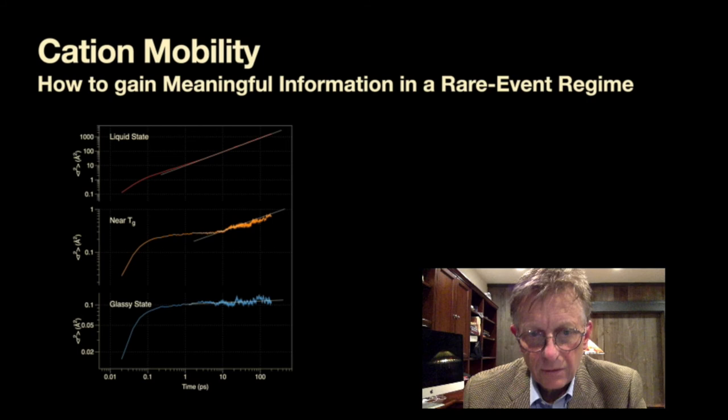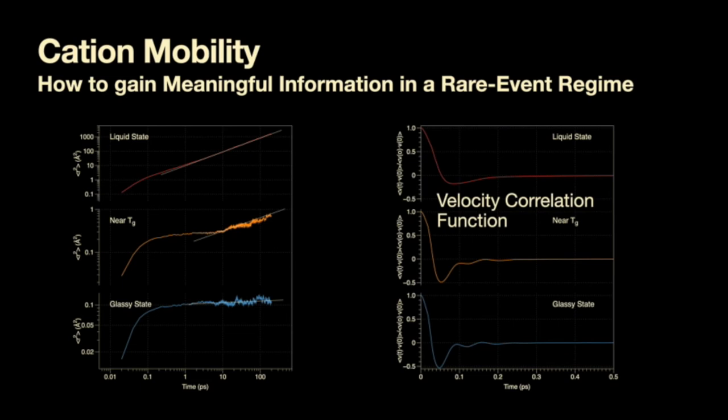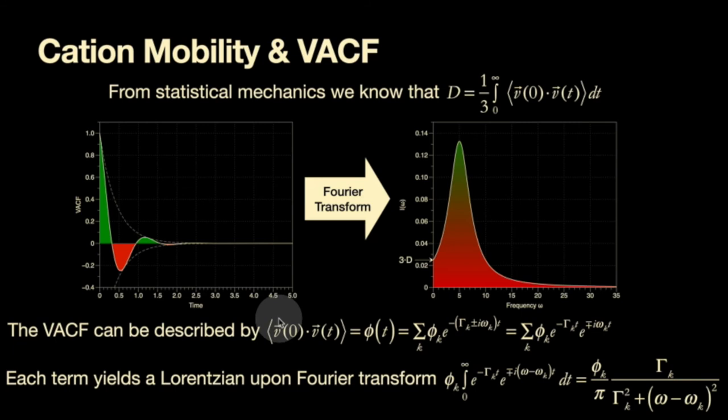But there's another technique which is the velocity correlation function. It changes also with temperature but the general character of this function is preserved and so we can use that in order to study the mobility perhaps a little bit better going from the liquid to the glassy state. And let's take a look at the meaning of the velocity correlation function that essentially can be construed as an oscillatory function that's being damped so you see the damping envelope here.